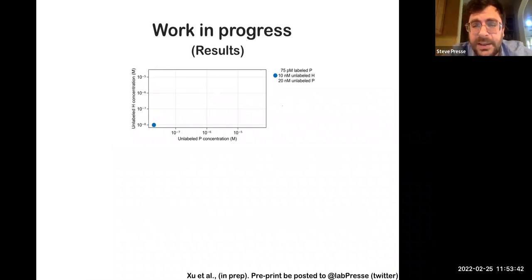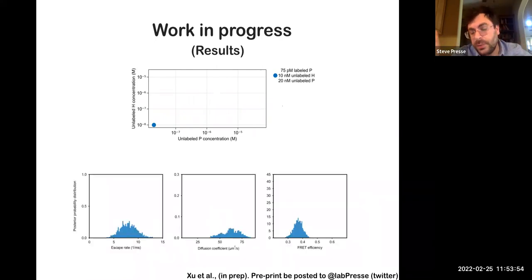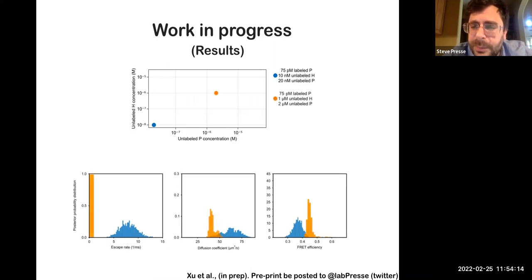So let me tell you some results that we obtained. We have three cases here, one of which we have 75 picomolar labeled prothymosin. And for all intents and purposes, a small amount of unlabeled histone and P. And we get some diffusion coefficient, some FRET efficiency and some escape rate for about 5000 photons. Those are consistent with what you get in the literature with orders of magnitude more photons. We more or less look at, we can look at as low as one burst, but typically we look at as many as five bursts at once.